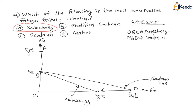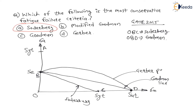If we join SE on the y-axis to SUT on the x-axis — point B to point D — with a parabola instead of a straight line, then it is called the Gerber parabola, or Gerber line.